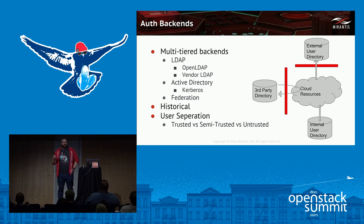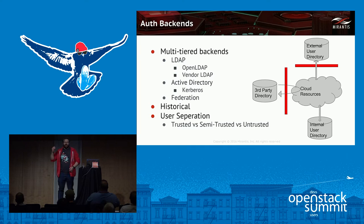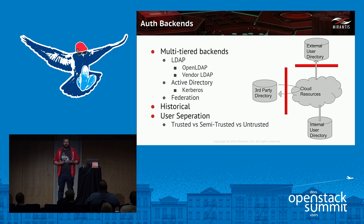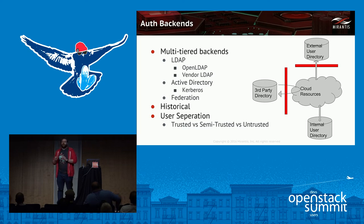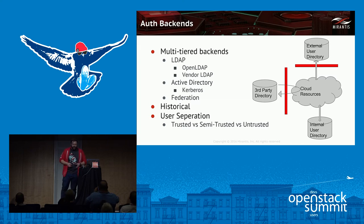Auth backends — one of the big things in the enterprise is we tend to have a lot of multi-tiered auth backends with different trust zones. A typical example: you'll have an internal Active Directory, an LDAP solution for customers, and then third-party sign-in from vendors. All of those have different trust levels, different rules, different roles. So we've got to handle things like role mapping. These are enterprise requirements that we as the OpenStack community need to start learning to deal with.